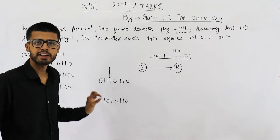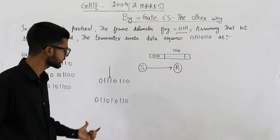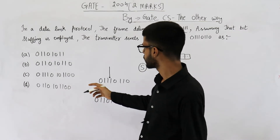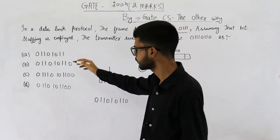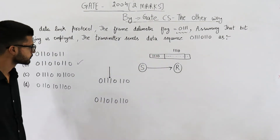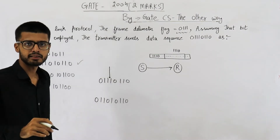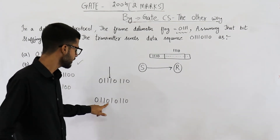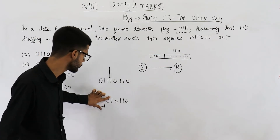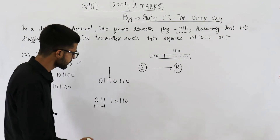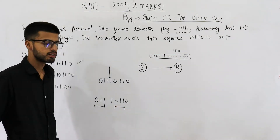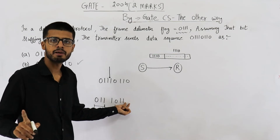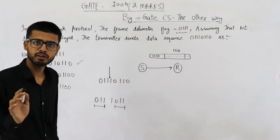And you can see that now there is no frame delimiter flag in our data. Some of you might think this is the correct answer, and possibly it will be present in the options — something like 011101010101010. But this is incorrect. Why? The receiver will see 0111 and think this 0 was added by the sender, so it removes it. Then it sees 0111 again and removes that 0 too — but that 0 was actually part of the original data. This is a problem.